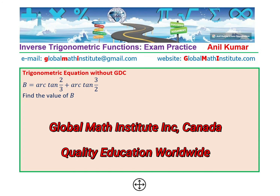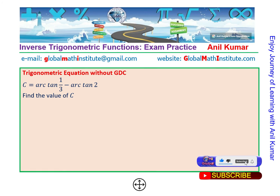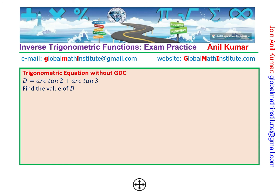Very similar to this is our second question. We have written tan inverse as R tan — so R tan is the same as tan inverse. So R tan (2/3) plus R tan (3/2). Then we have a question involving R tan (1/3) minus R tan 2, and the last question is R tan 2 plus R tan 3.